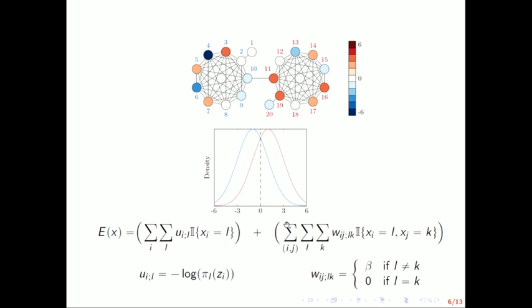The pairwise cost, so between any connected pair, basically if you give XI label L, XJ label K, that costs you something if L and K are different. This is how the network is incorporated into the labeling. And this is also how you get this smoothness in the labeling, right? So neighboring nodes should have the same label if they're next to each other.